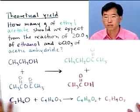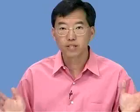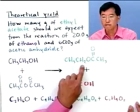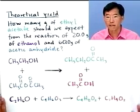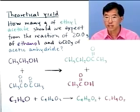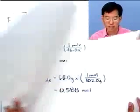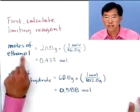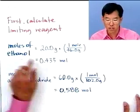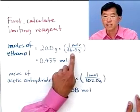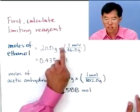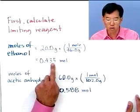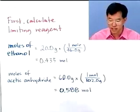So how do we approach this problem? Remember, to use the balanced reaction, things have to be in moles. In order to figure out how much stuff we're going to make, we first have to figure out what we're going to run out of first — that's a limiting reagent problem. To calculate the limiting reagent, we first figure out how many moles of ethanol we started with: 20 grams divided by 46 grams per mole gives us 0.435 moles of ethanol.